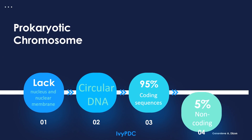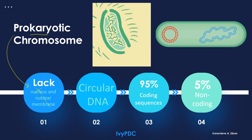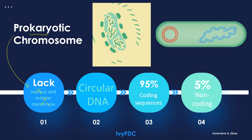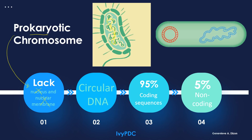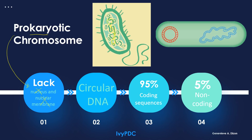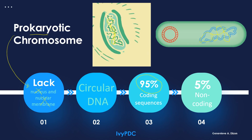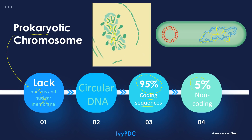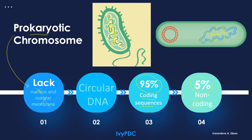Let's now go to prokaryotic chromosomes. Prokaryotes do not have a nucleus and do not have a nuclear membrane — the chromosome just floats around inside the cell. This chromosome is usually arranged in a circular manner. 95% of the chromosome has coding sequences, while only 5% have non-coding sequences.